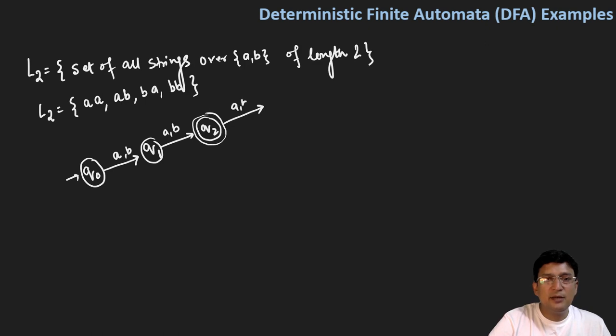But if a third symbol comes in the string, then our string should get rejected. So this is the q3 state which will be a dead state. And if four symbols come then also it should be rejected, five symbols also rejected. That means from q3 on getting a or b symbol you will remain in the same state. So let's take some strings.